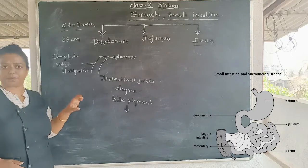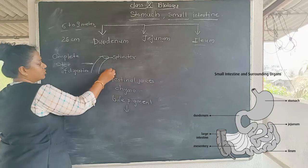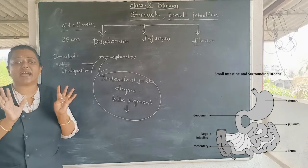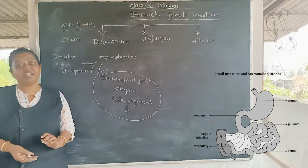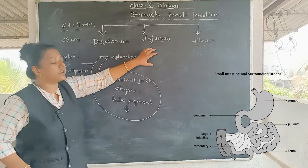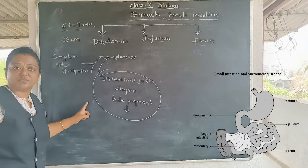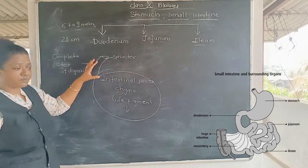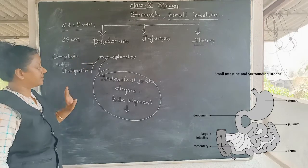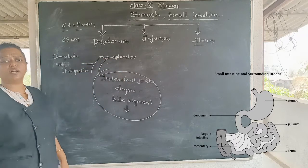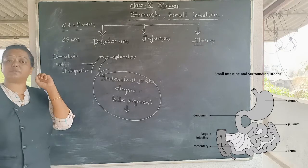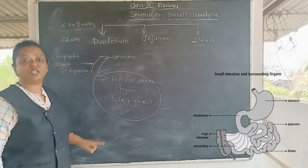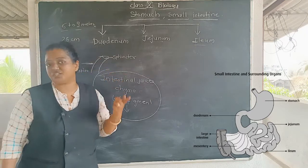So lipids and proteins get completely digested in the duodenum. Everything — intestinal juices, bile pigments, food — gets digested in the duodenum. The food then enters the next part of the small intestine, the jejunum. Carbohydrates are already digested into glucose. All nutrients get converted into a water-soluble form, and those water-soluble nutrients then enter the jejunum.